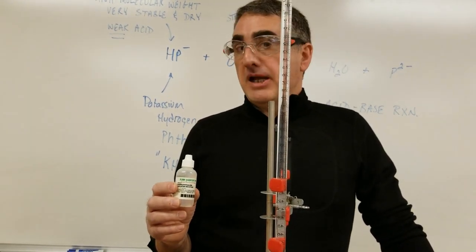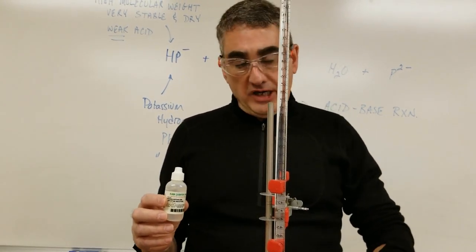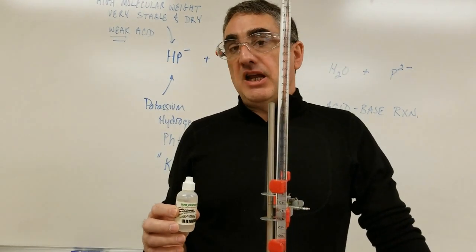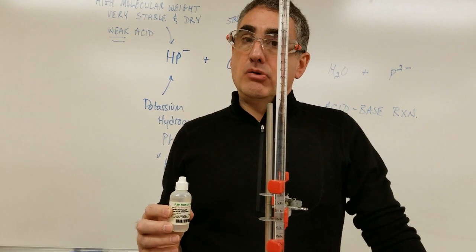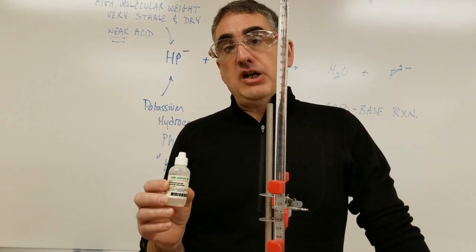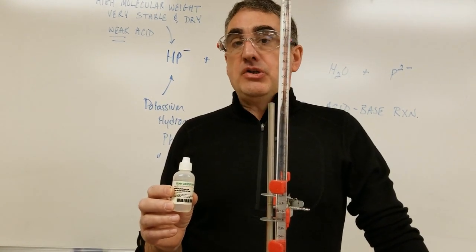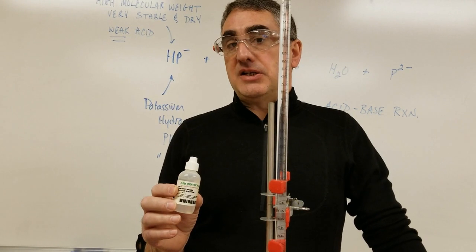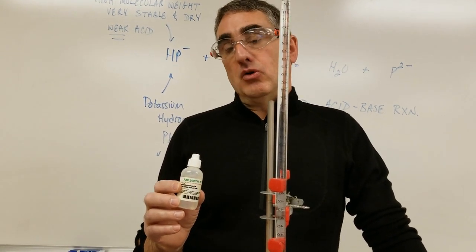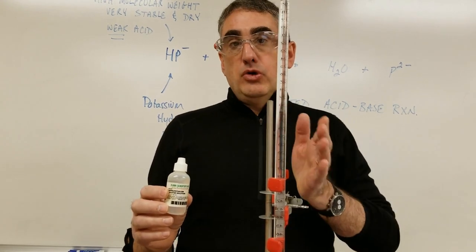We chose phenolphthalein because we are titrating a weak acid with a strong base, and the expected pH at the equivalence point is going to be around 9. Phenolphthalein has an effective range of between a pH of 8 and a pH of 10, so this is colorless in an acidic solution.